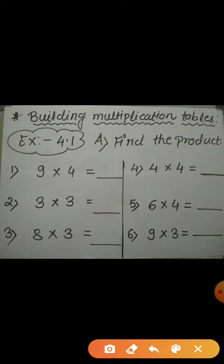In the second example, we have to find the product of 3 and 3. So, we have to say the table of 3 now. 3 ones are 3, 3 twos are 6, 3 threes are 9. So, the product is 9.